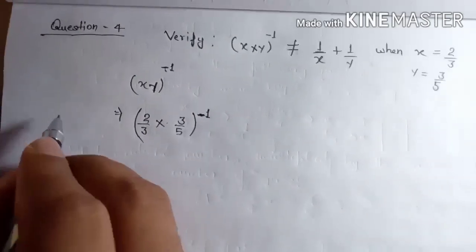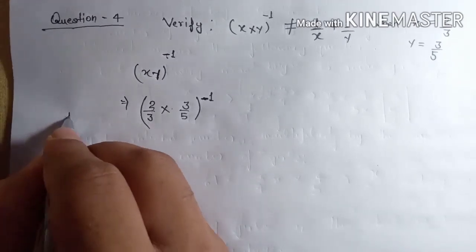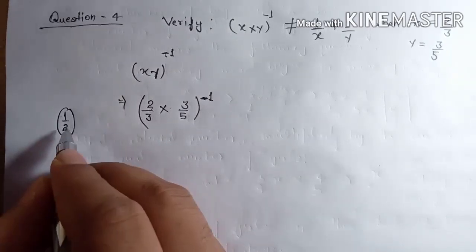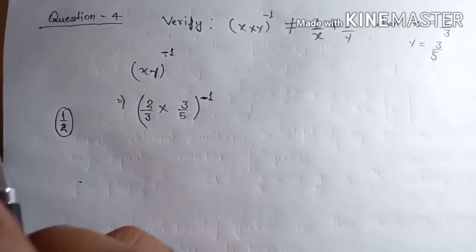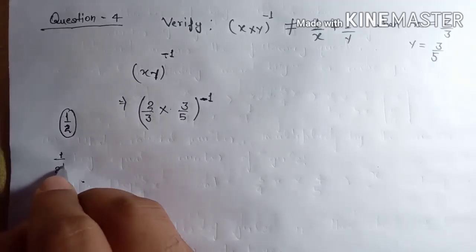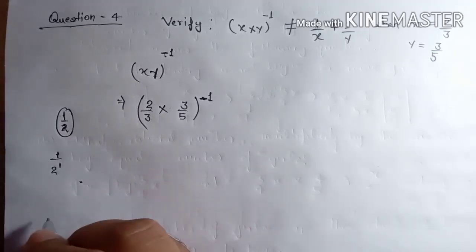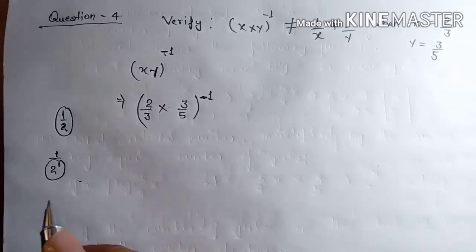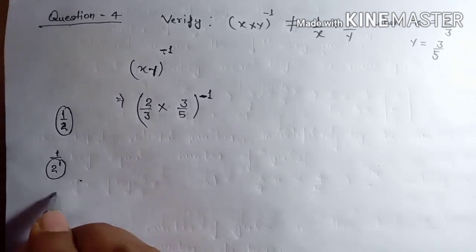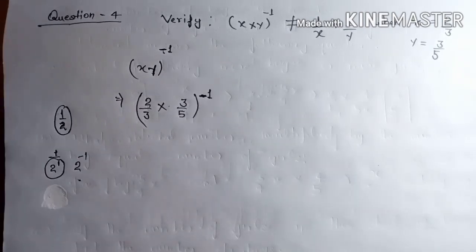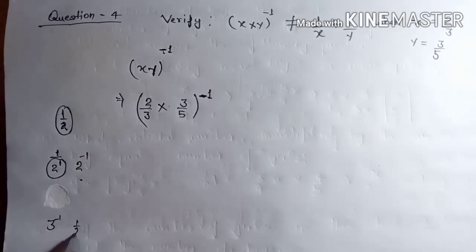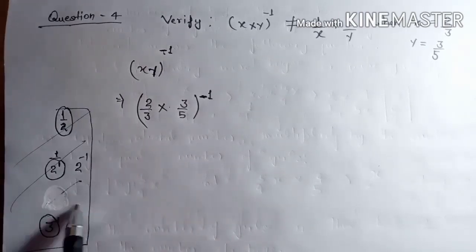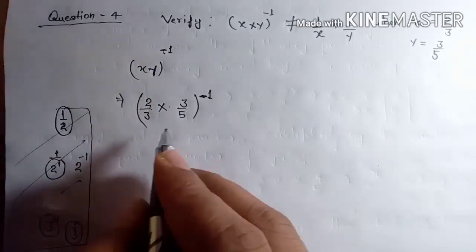If it is written 1 upon 2, the power of 2 here is 1 — two ones are two. When 2 to the power 1 comes as a numerator, it becomes 2 to the power minus 1. And if it is written 3 to the power minus 1, it means it is 1 upon 3. This is your rough work — do not write this in your fair copy. Now multiply.